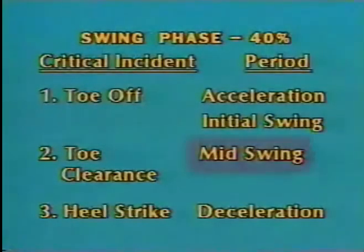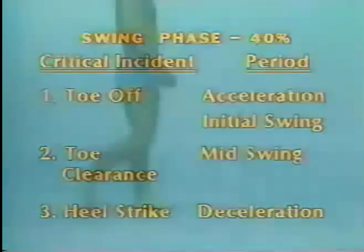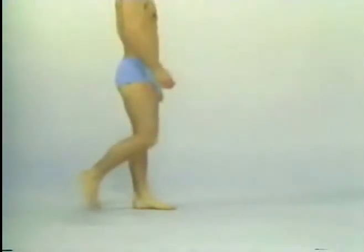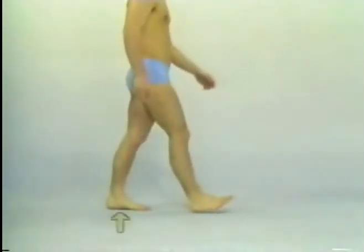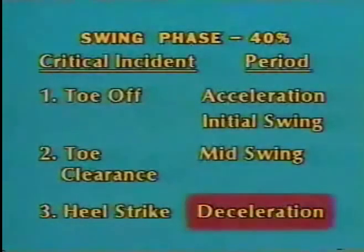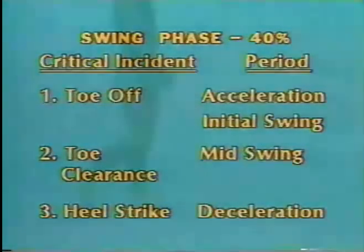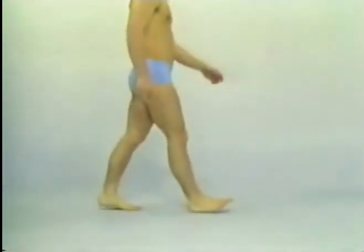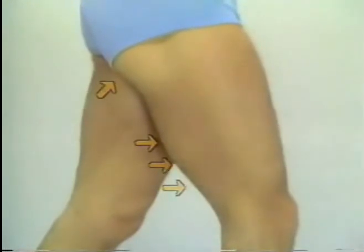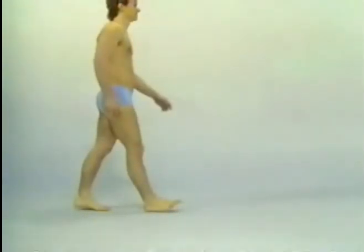Mid swing is that portion of the cycle when the swing leg advances through and in front of the opposite leg, which is concurrently in the mid stance phase. Deceleration. The leg in the swing phase must be slowed down just prior to heel strike and this is brought about by contraction of the hamstrings and gluteus maximus, and is known as the deceleration period of the swing phase. At heel strike, one then begins another gait cycle.